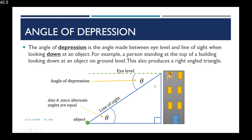Please take note that for the angle of depression, theta is not inside the triangle at the top. We know that alternate angles are equal, so using the Z shape being formed, the angle on the inside of the triangle is also equal to theta, the angle of depression. This gives us our right angle triangle, where one side represents the height of the building, another represents how far the object is from the base of the building, and the hypotenuse represents the line of sight.